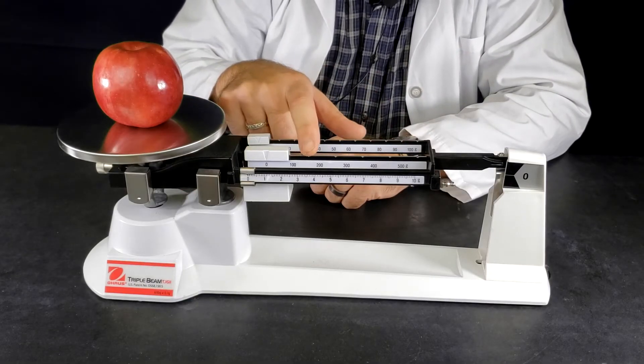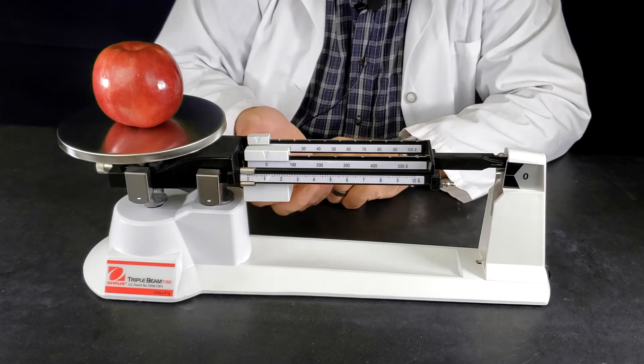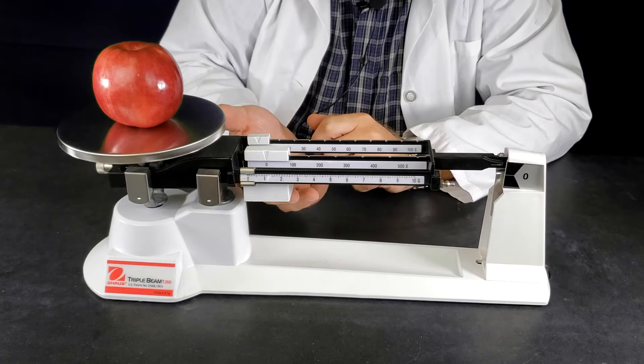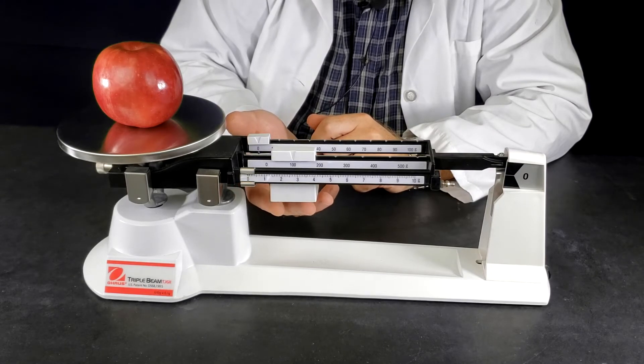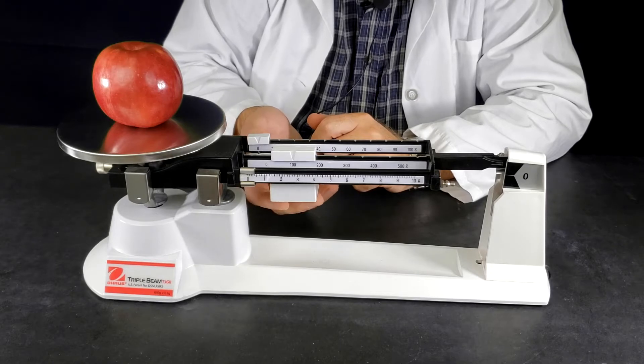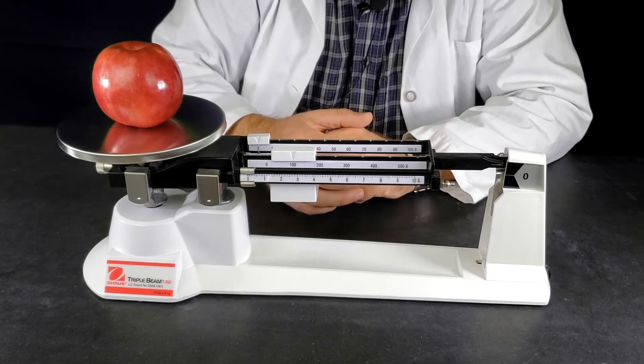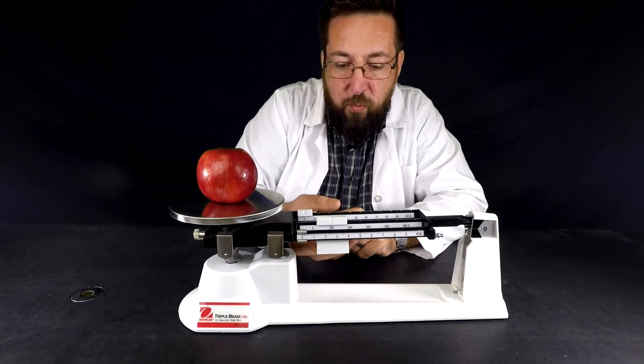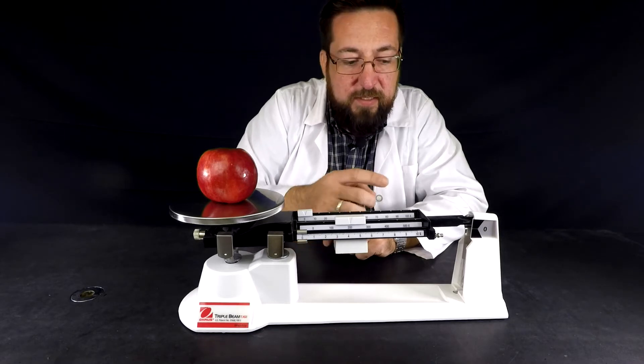Now notice that there are notches in the rider bars and I have to make sure that my riders fall into the notches and you can feel it and hear it when you use one in real person. So I just moved it to 100 and notice that the pointer did not go down. That means that my apple has a mass greater than 100 grams. If I move it to 200 it still hasn't gone down so I know that it's more than 200 grams.